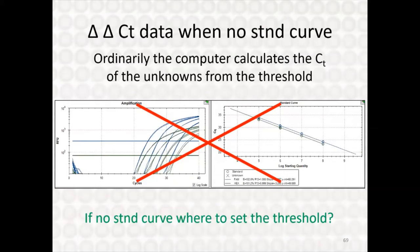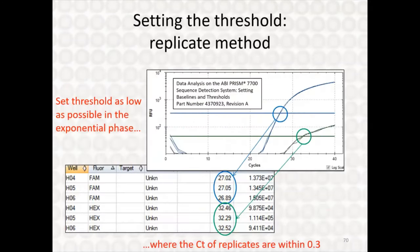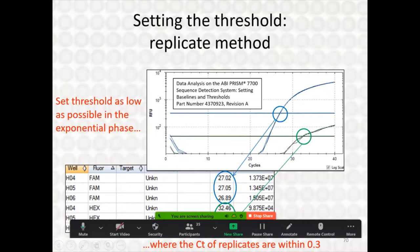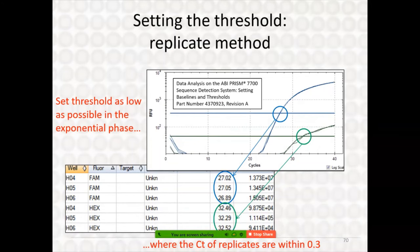If you're about to analyze your data and don't know where to set the threshold, go back to the replicate method: set the threshold as low as possible in the exponential phase where replicates are as close together as possible — preferably with CTs within 0.3 of one another.